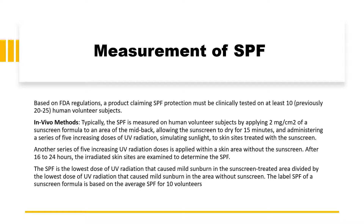The SPF is calculated as the lowest dose of UV radiation that causes mild sunburn in the sunscreen-treated area divided by the lowest dose of UV radiation that causes mild sunburn in the area without sunscreen. The labeled SPF of a sunscreen formula is based on the average SPF of 10 volunteers.